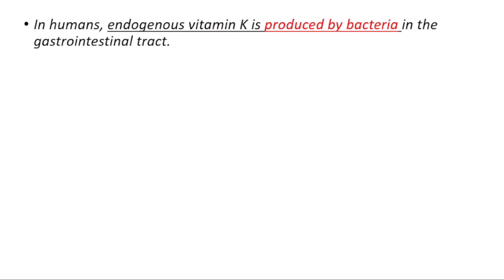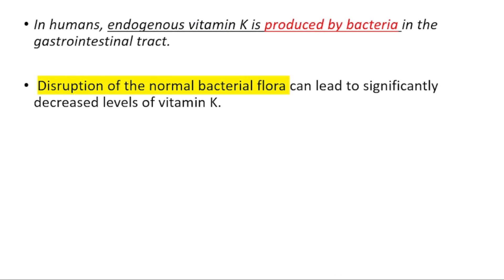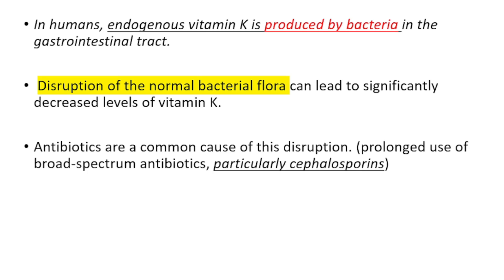In humans, endogenous vitamin K is produced by the bacteria in the gastrointestinal tract. Disruption of this flora can lead to significantly decreased levels of vitamin K, which as mentioned earlier can cause bruising, bleeding problems, and soft tissue calcification.